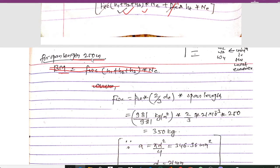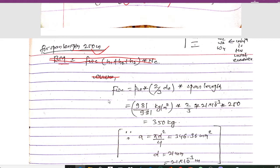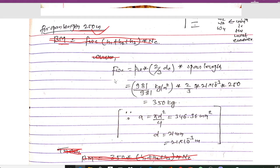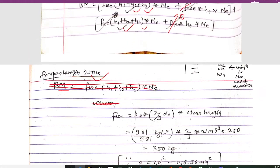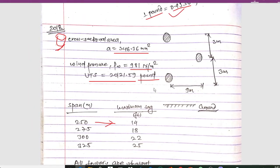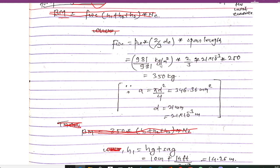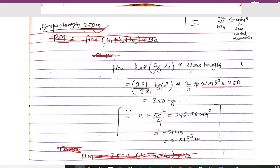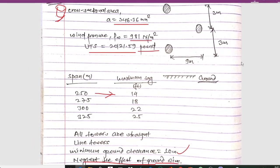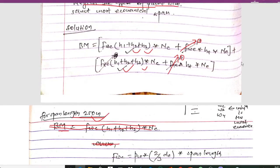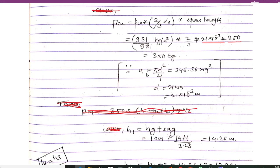For a span length of 250 meters, we first calculate Fwc, the force due to conductors. The formula is Fw = Pw × (2/3) × dc × span length. Pw is given as 981 Newton per meter square; dividing by 9.81 gives kg per meter square. The value of dc is 21 × 10⁻³ meters, derived from the given cross-section area, and span length is 250 meters.